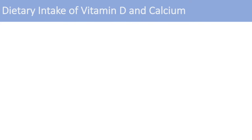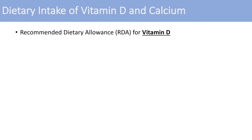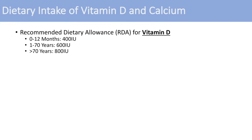According to the National Institute of Health, the recommended dietary allowance for vitamin D in early life — 0 to 12 months of age — is 400 international units per day. From 1 to 7 years of age, it is 600 international units per day, and greater than 7 years of age, 800 international units per day.